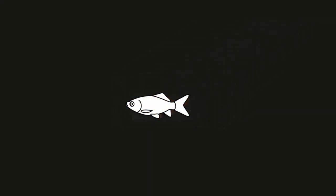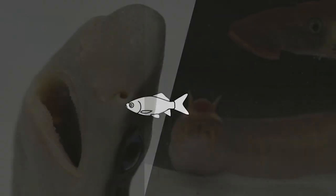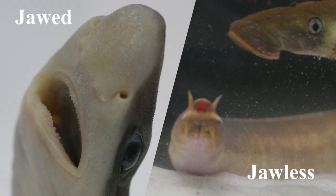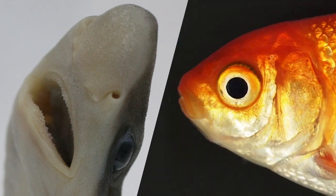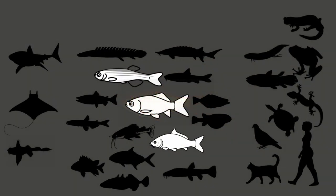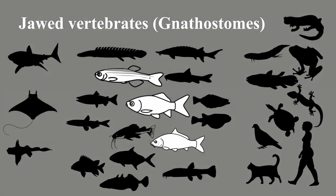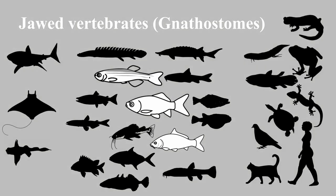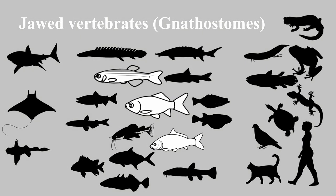Goldfish is one of the vertebrate species. Vertebrate species can be divided into two groups: jawed and jawless vertebrates. As you can see, goldfish have jaws, so it is obvious that goldfish are categorized into the jawed vertebrate group.